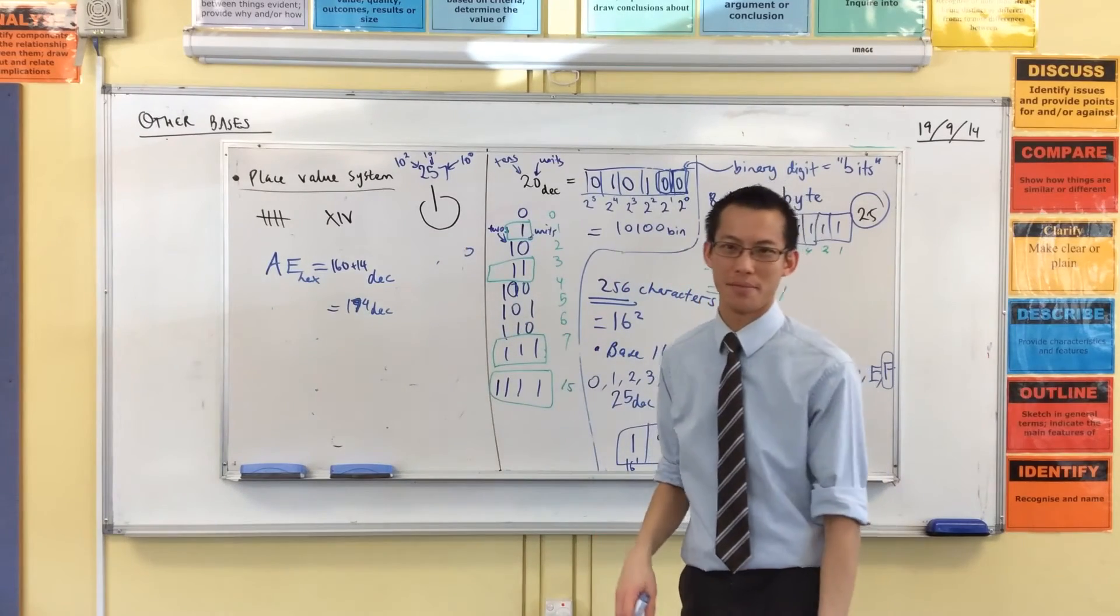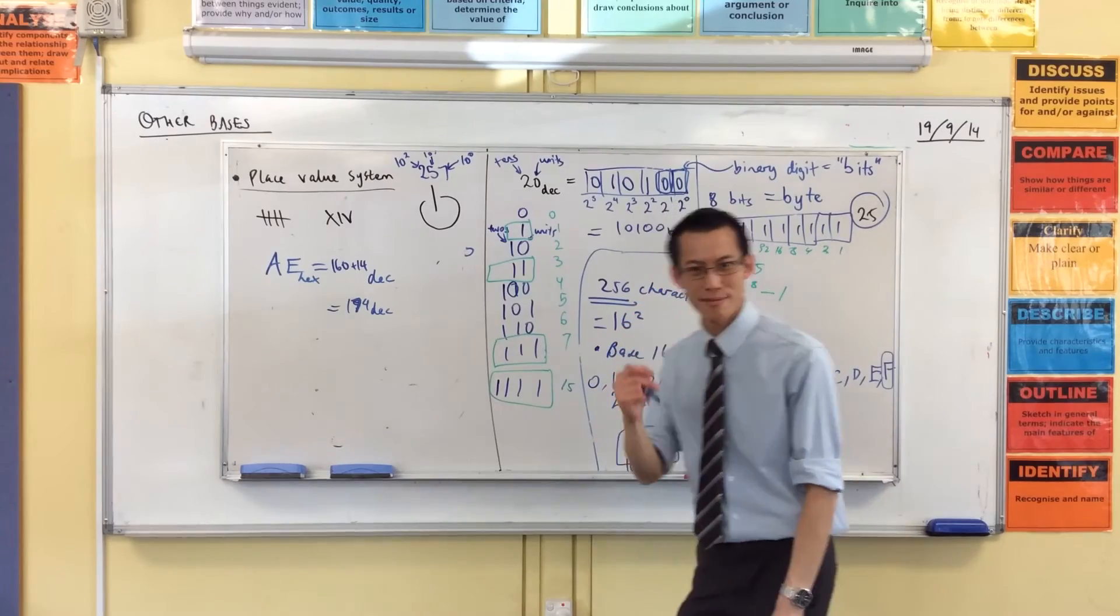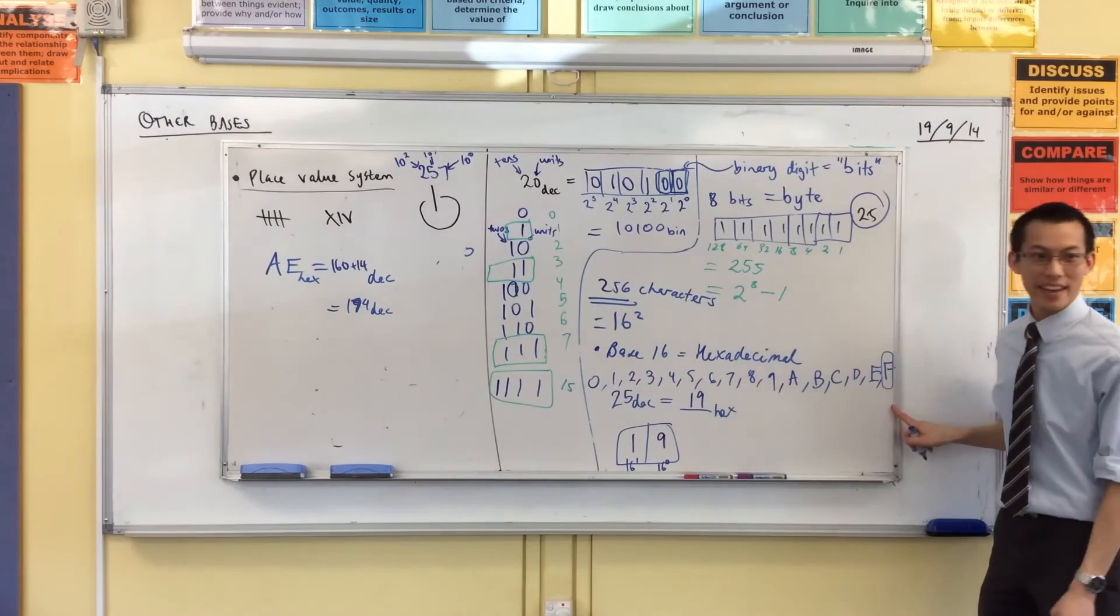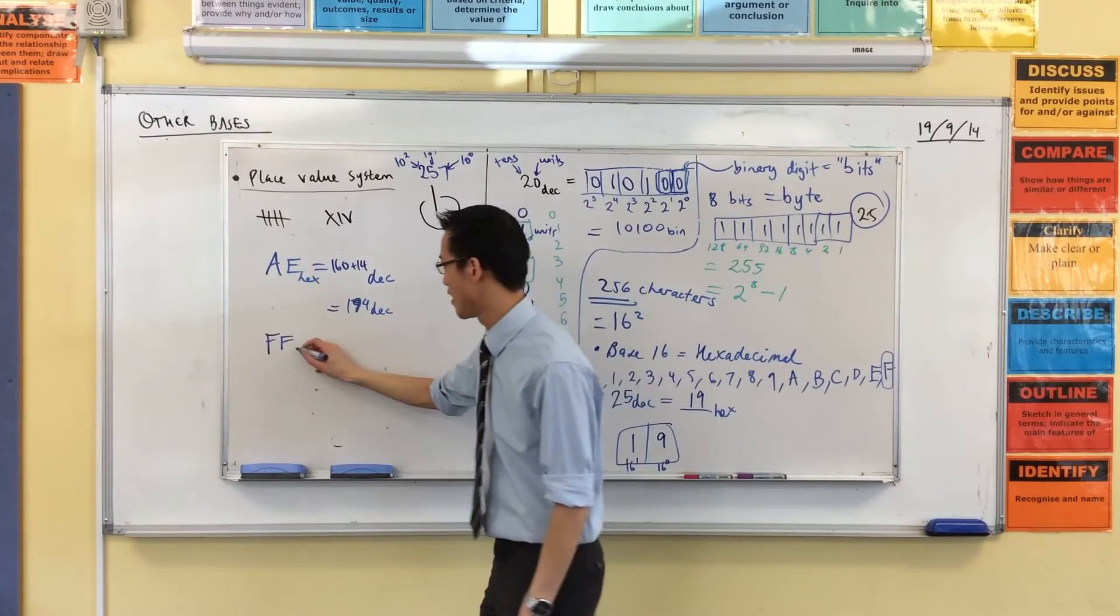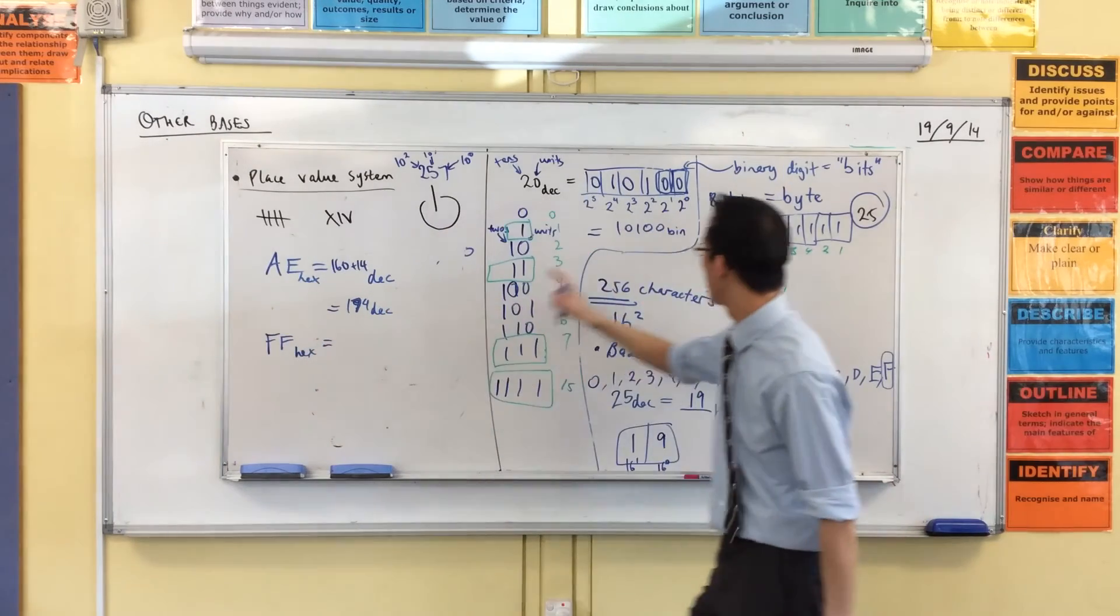What's the biggest number I can represent in just two characters? It'll be FF, right?